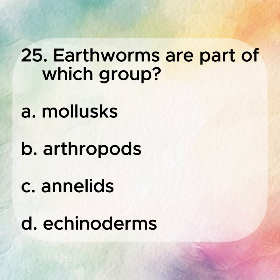25. Earthworms are part of which group? A. Mollusks. B. Arthropods. C. Annelids. D. Echinoderms.